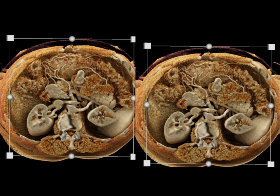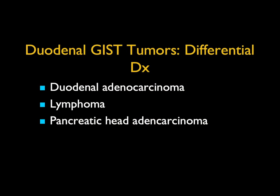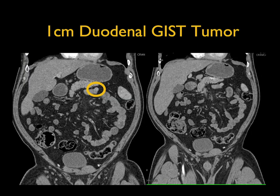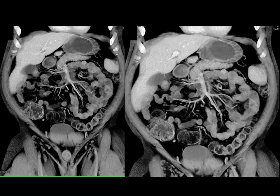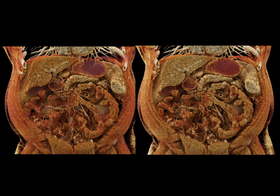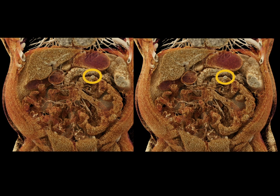Duodenal GIST tumors can be confused with adenocarcinoma — especially if you only have venous phase imaging — or with lymphoma due to the exophytic component, and also with pancreatic adenocarcinoma. The importance of coronals and 3D reconstructions cannot be highlighted enough. A one-centimeter lesion off the jejunum is much more clearly demonstrated on 3D reconstructions by comparing contrast in the bowel lumen with the lesion. With AI and cinematic rendering, the lesion stands out much better, and AI holds promise for detecting these small bowel lesions.